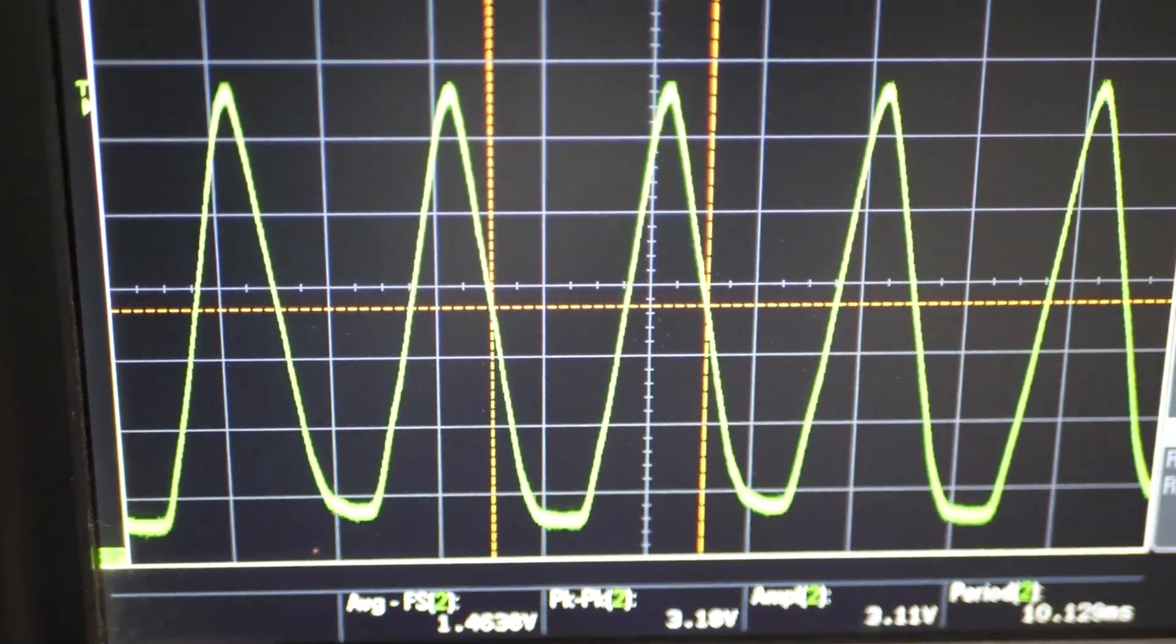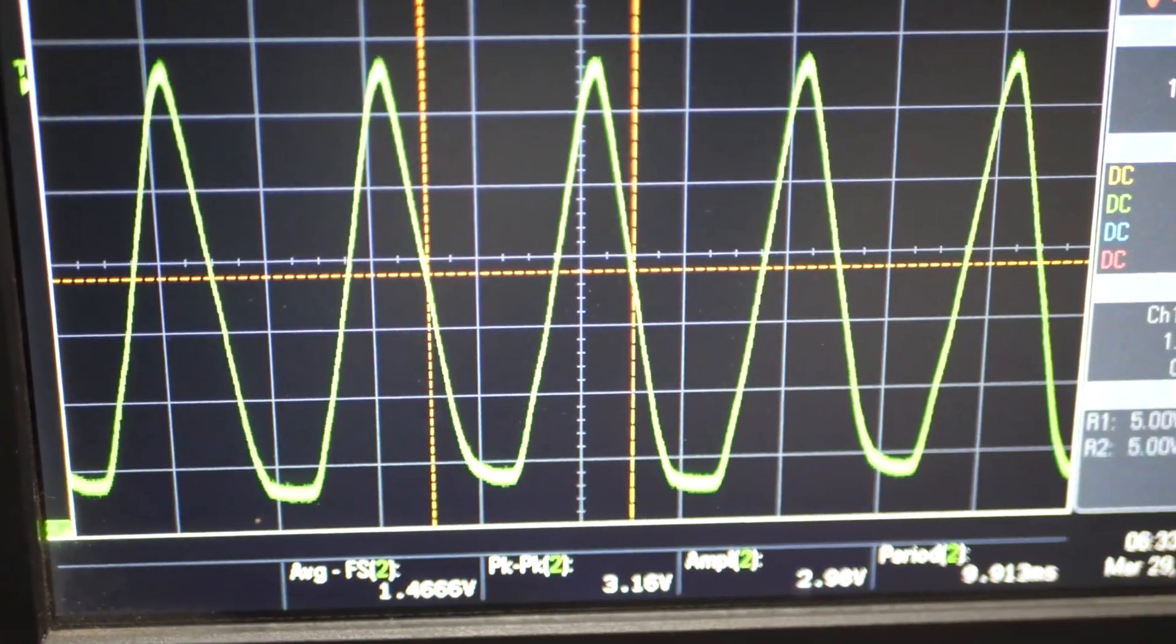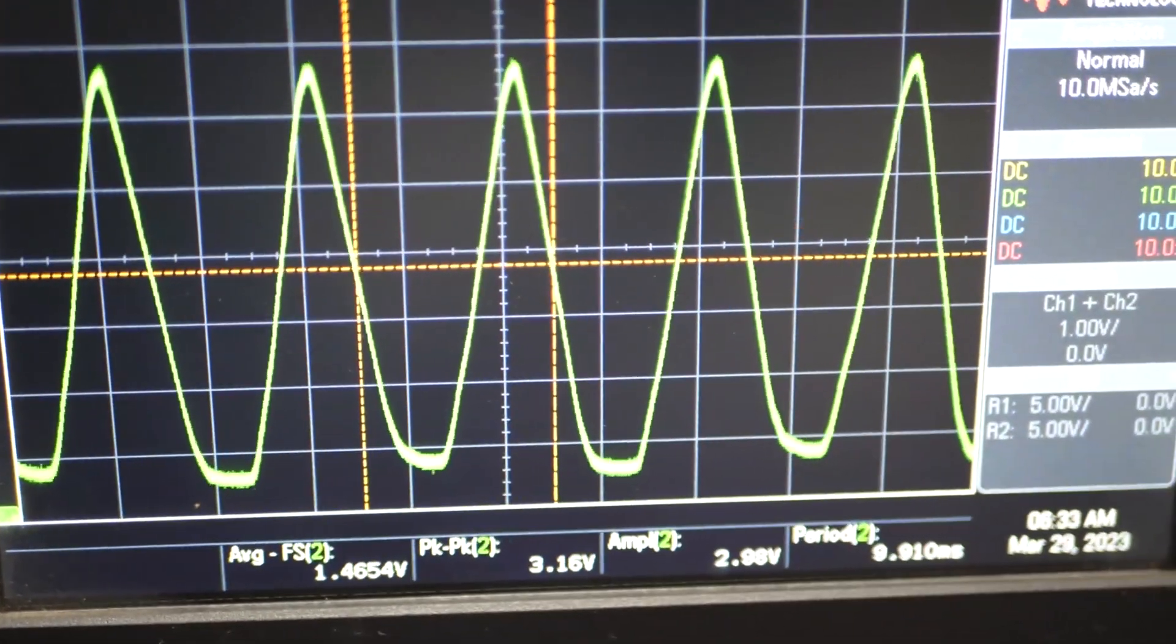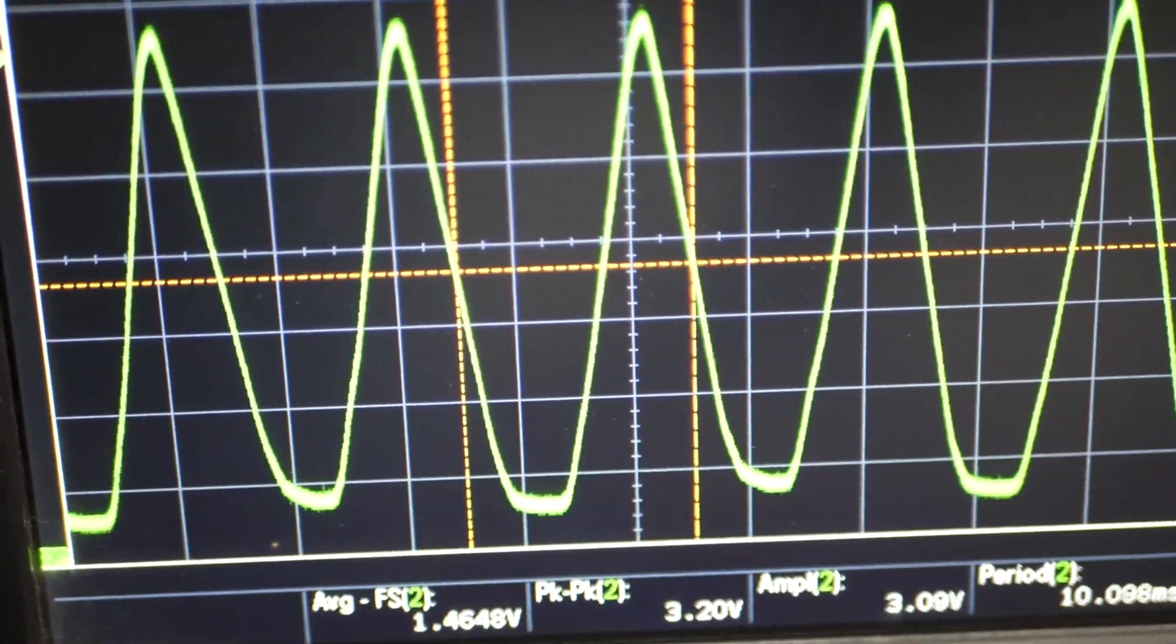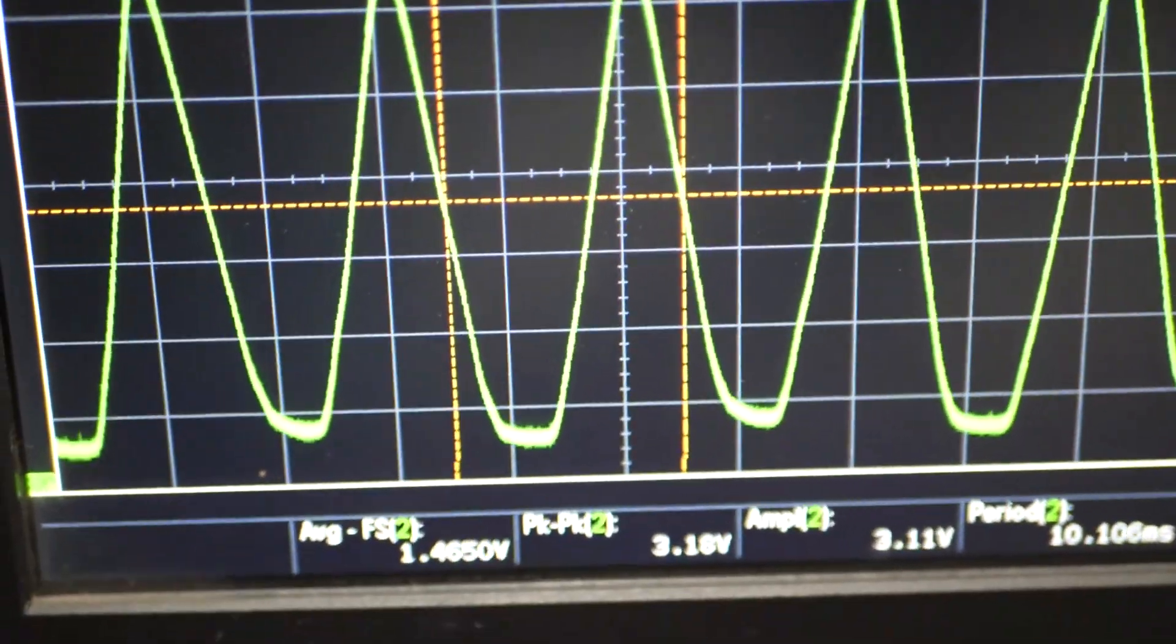Since the transistor's collector terminal is pulled up using 2.2K resistor, whenever zero crossing occurs this turns off the otherwise on transistor. This signal is fed to the Pico digital input pin.